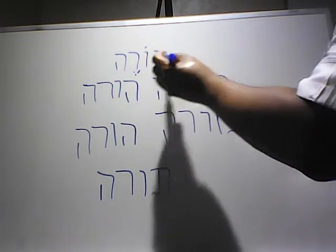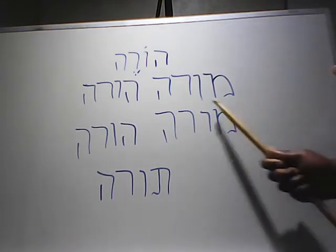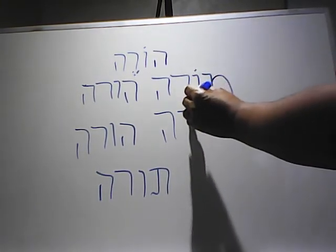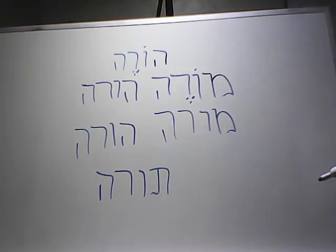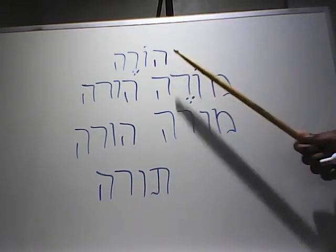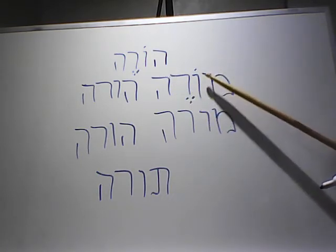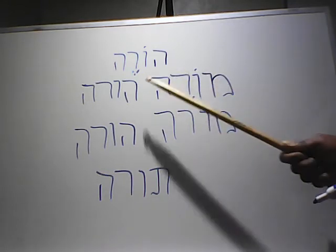Hora in the hif'il stem, which in root means 'to teach.' So we have this word here: more. The word more means teacher. So what do we see so far — the verb, and then the noun with the prefix of the mem there. This is a male teacher.